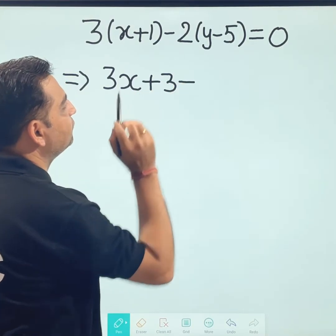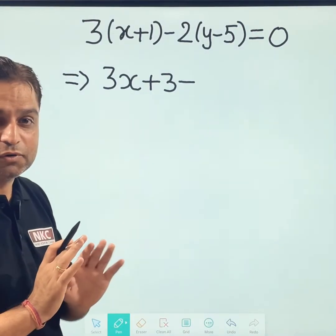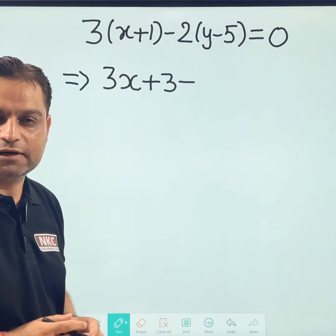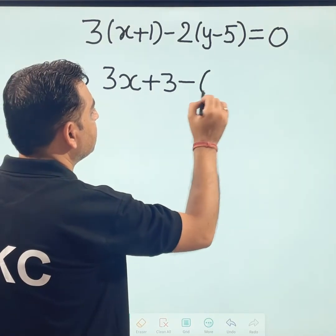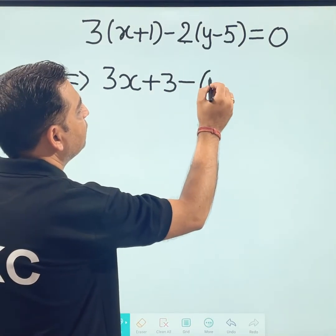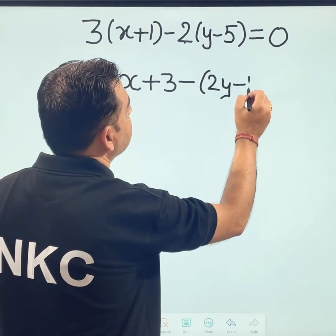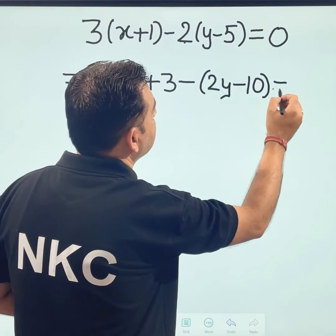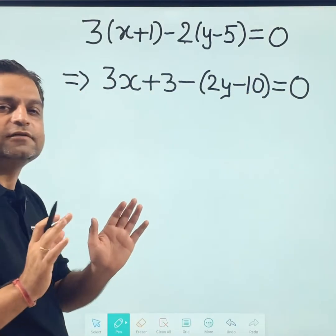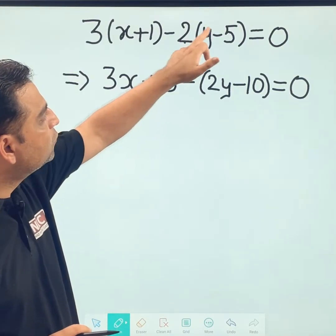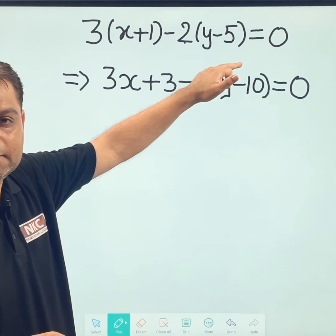I am keeping negative sign as it is as of now. I am not going to change anything. 2 I am going to bring inside and keeping the bracket as it is. 2 multiplied by y, this is 2y. 2 multiplied with 5, this is 10. I am keeping every sign the same way it is there. Nothing is changed. Only 2 is brought inside the bracket.